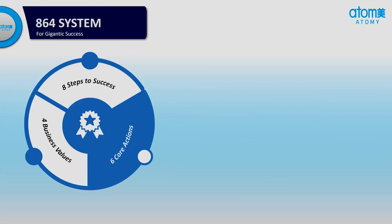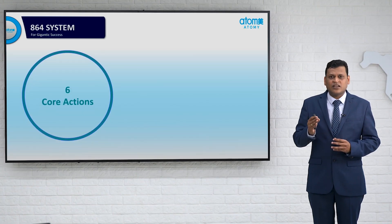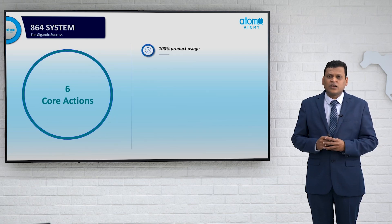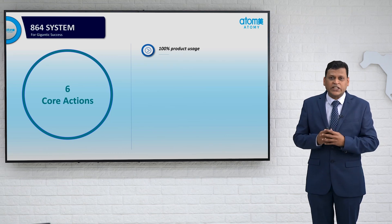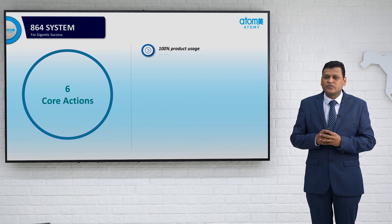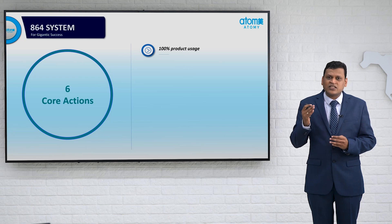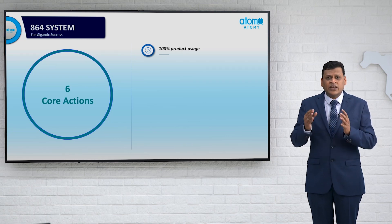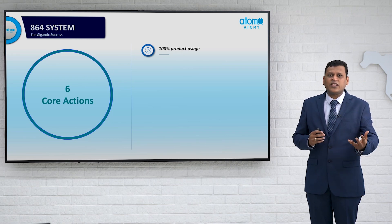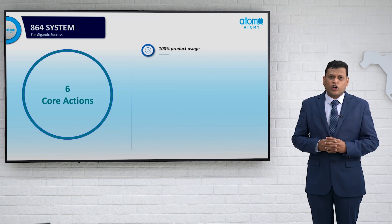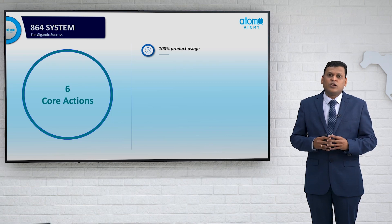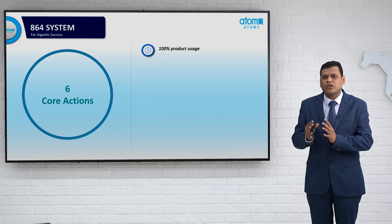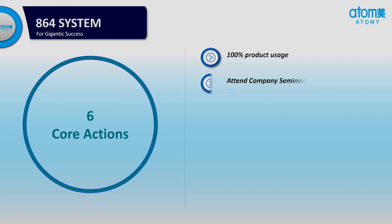Now let us talk about the 6 in the 864 system — the 6 core actions. The first core action is 100% product usage. We have nearly 50 products in India. Please use all these 50 products one by one. When you use the products yourself, only then will you be able to tell others about the benefits. If you don't use the products, you will not be able to explain them.